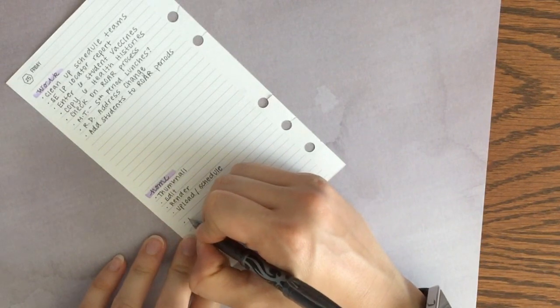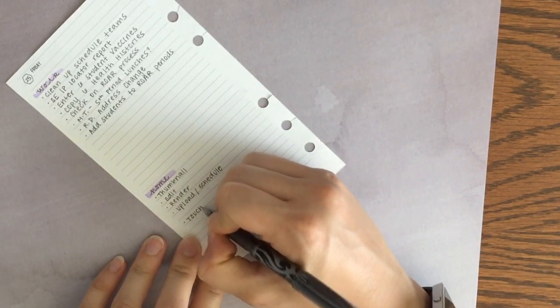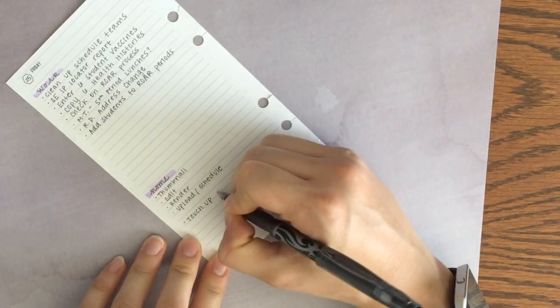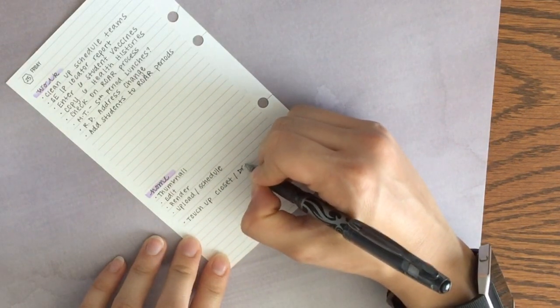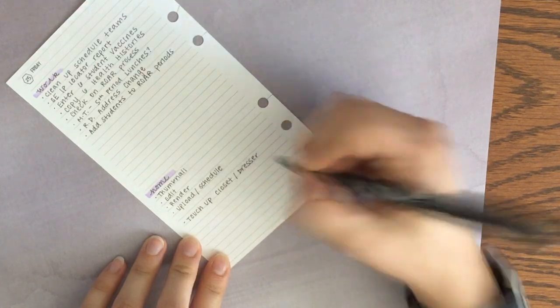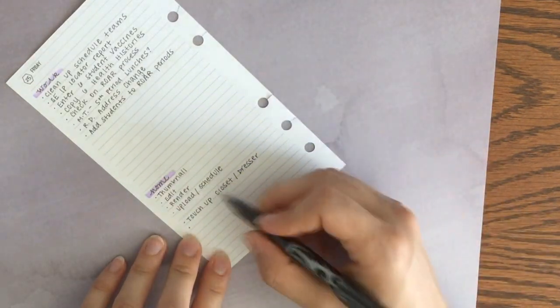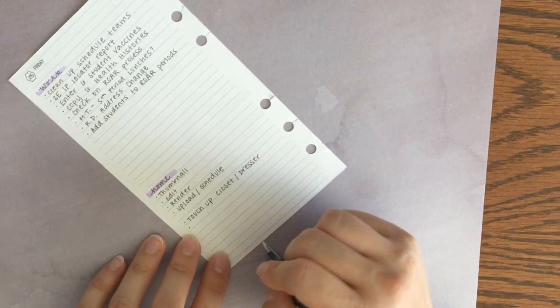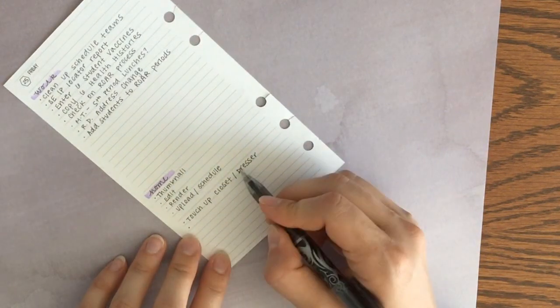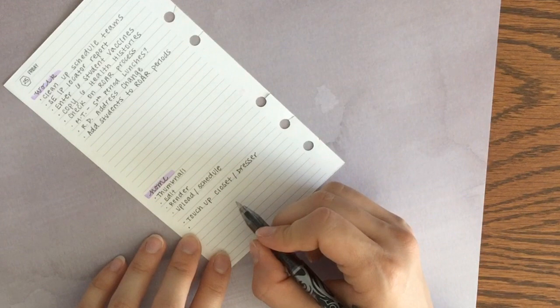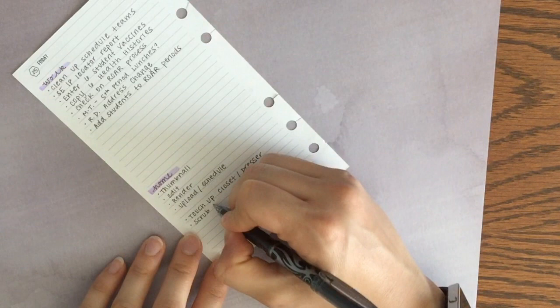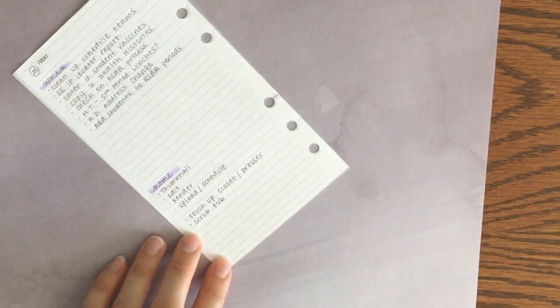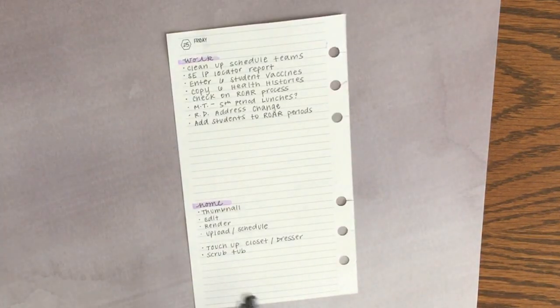I'm just going to jot those down. None of those places in my house right now are particularly messy, they're all relatively clean, so I do think that I'll have time to touch up my closet and dresser, just reorganize a little bit, and if there's anything I want to move to my donate bag I'll do that as well, and then just give the tub a quick scrub. I just add those to my list.